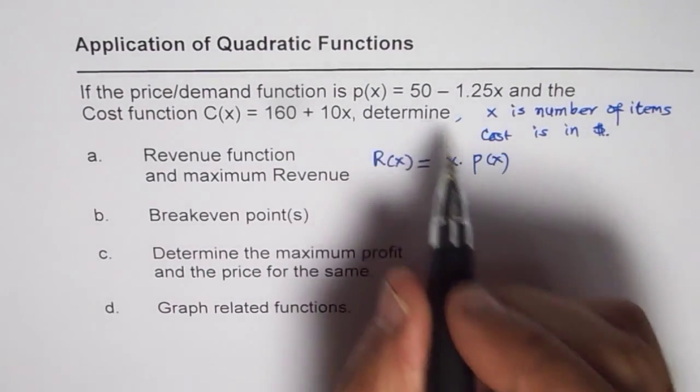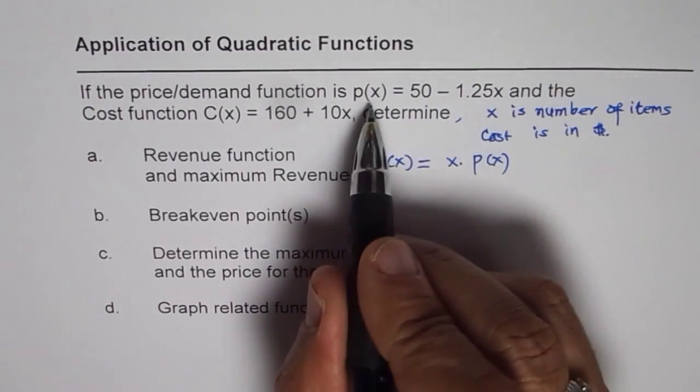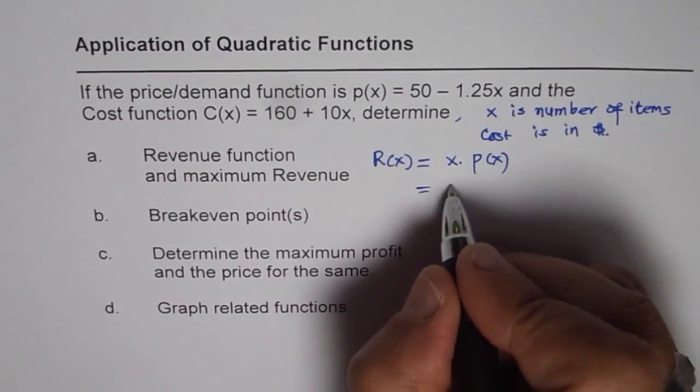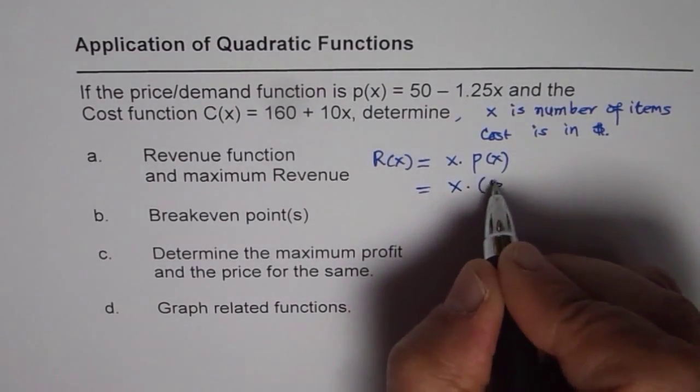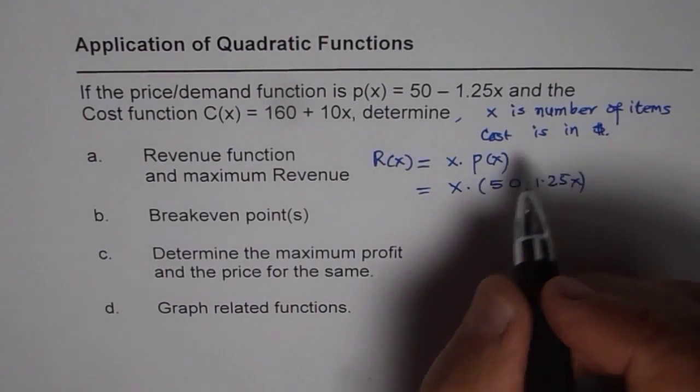So x times 50 minus 1.25x will give you the revenue function. So from here you can find the maximum revenue.